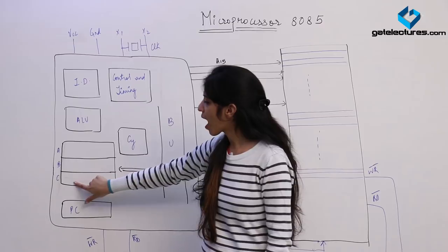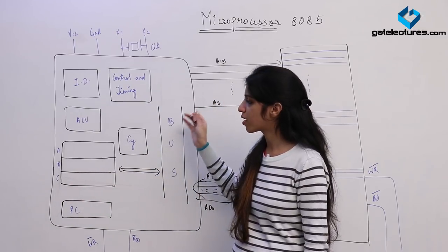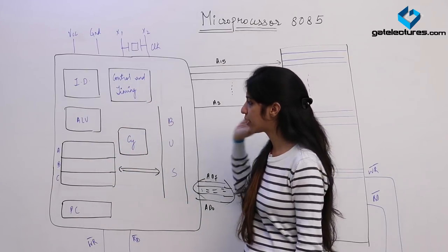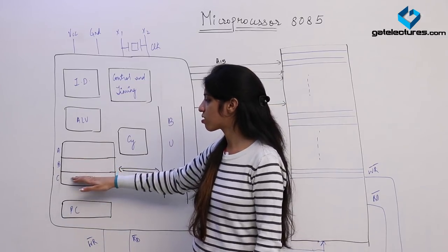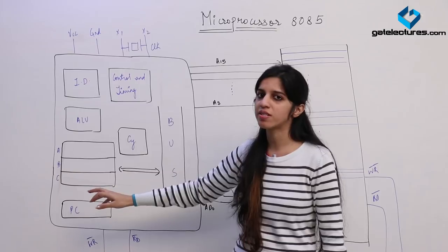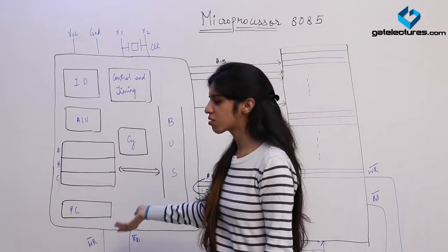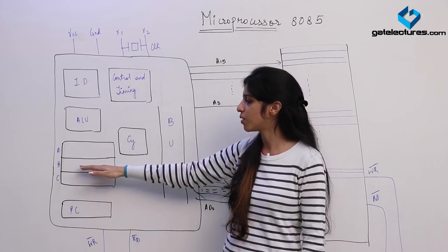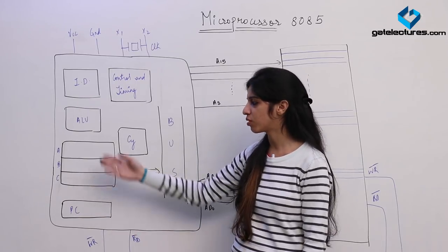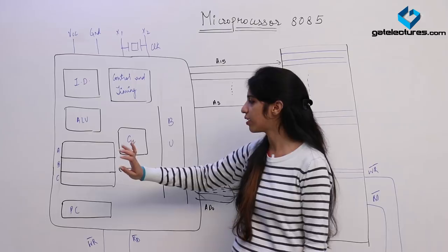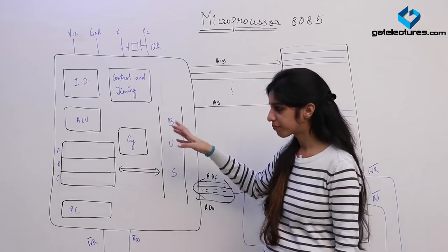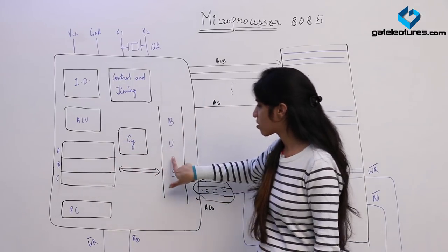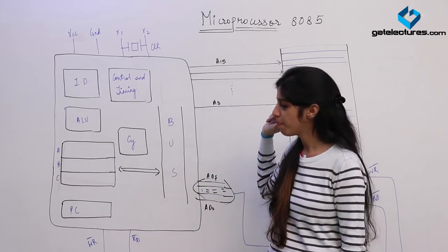These are different registers. The 8085 microprocessor has registers A, B, C, D, E — five registers — and one H-L pair. The work of these registers is to hold data. Suppose you put one data in register B and another in register C, then add them and put the result in A. The bus is used to transfer data from memory to register or register to memory.